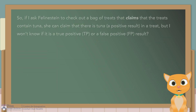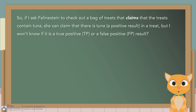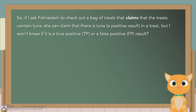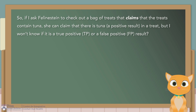So, Hera, if I understand this correctly, if I ask Feline Stein to check out a bag of treats that claims the treats contain tuna, she can claim that there is tuna — a positive result — in a treat, but I don't know if this is a true positive or a false positive result.